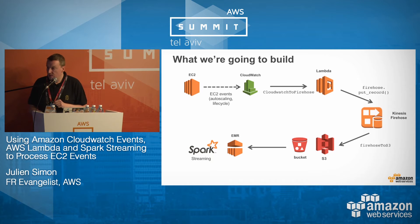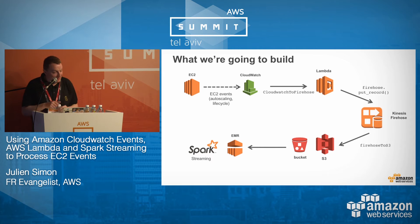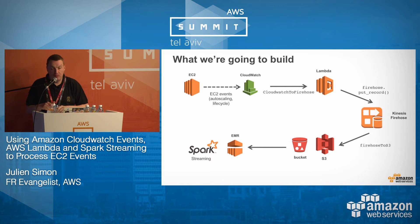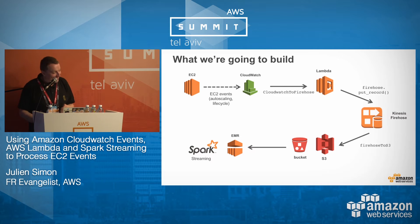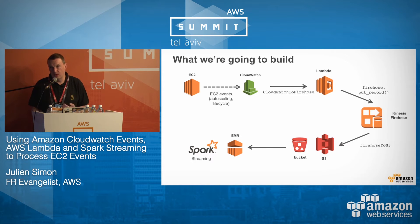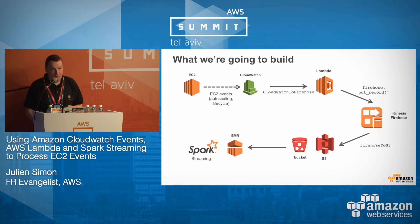So, what we're going to build is this — and yes, there's Lambda again. What we're going to do is start some EC2 activity, start some instances, stop some instances, and change their state. This will automatically send an event to CloudWatch. In CloudWatch, you can define rules on those events and say: when EC2 activity happens, when auto-scaling activity happens, do something. In this case, we're going to call a Lambda function.